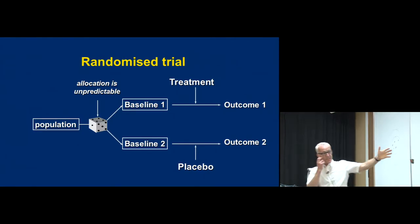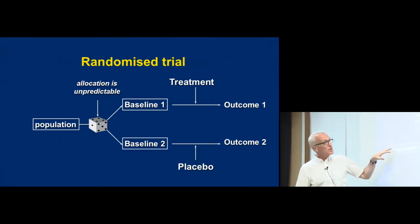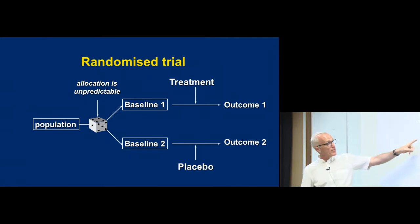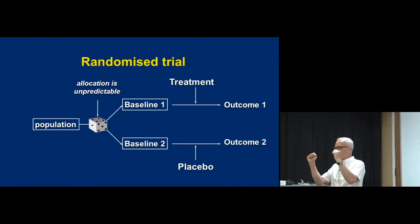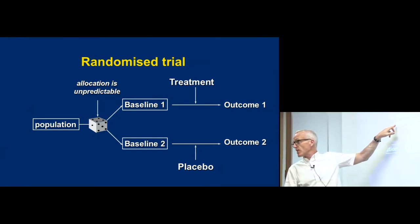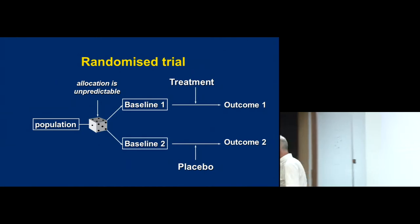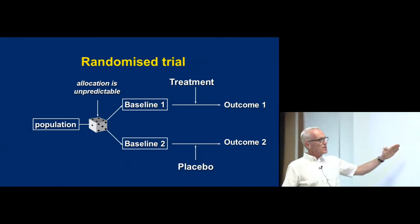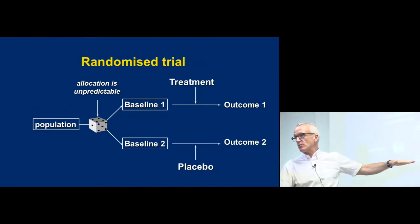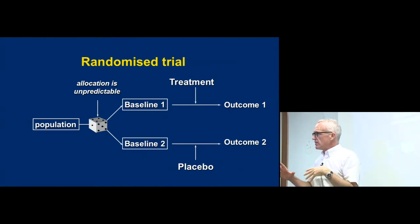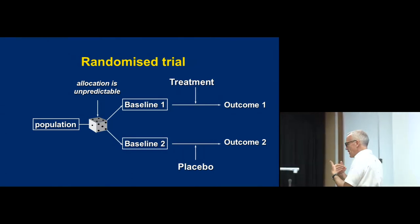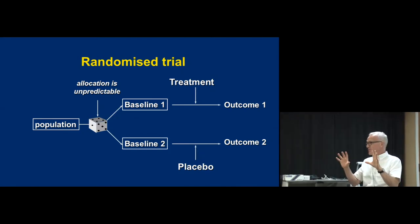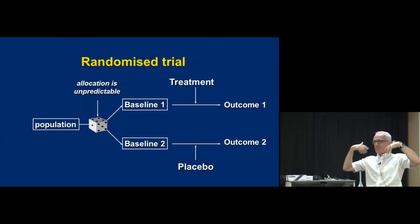This is a randomized trial — very simple structure. The key element of a randomized trial is the randomization and allocation concealment. The key word is unpredictable. The allocation must be unpredictable. If the allocation is unpredictable, then chance and chance alone determines who gets into the two groups, and these two groups should differ only by the play of chance — there shouldn't be differences over and above chance.